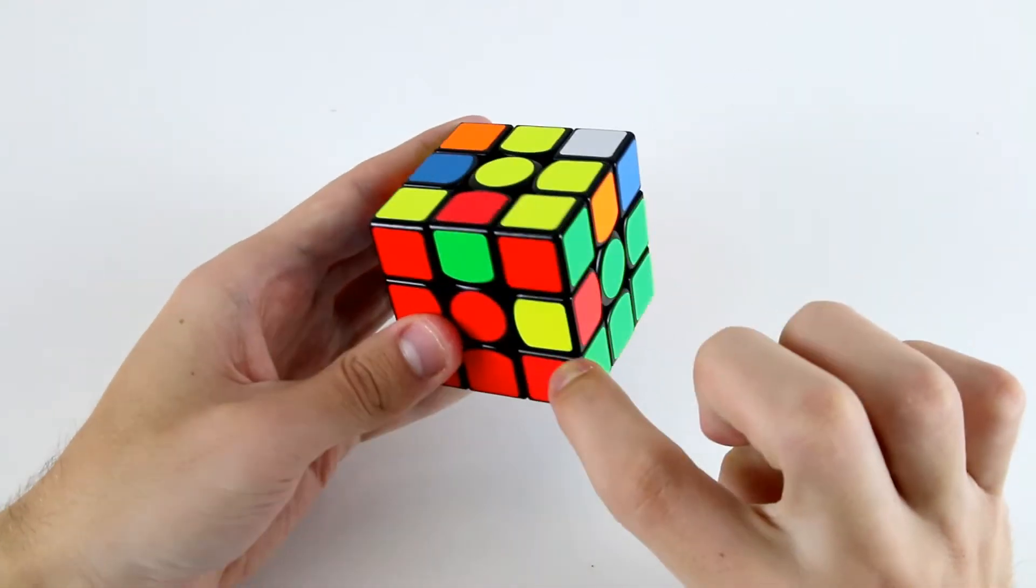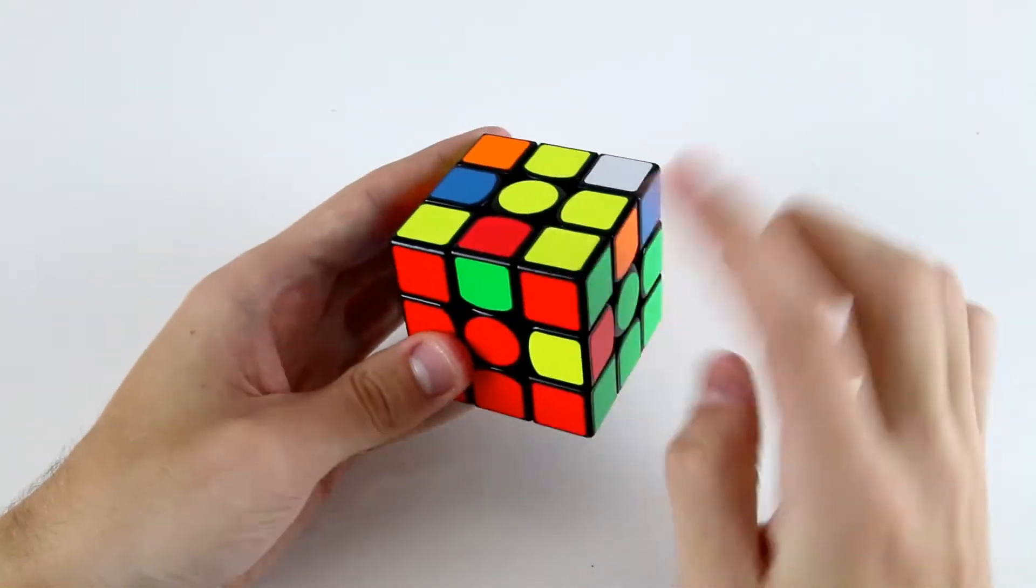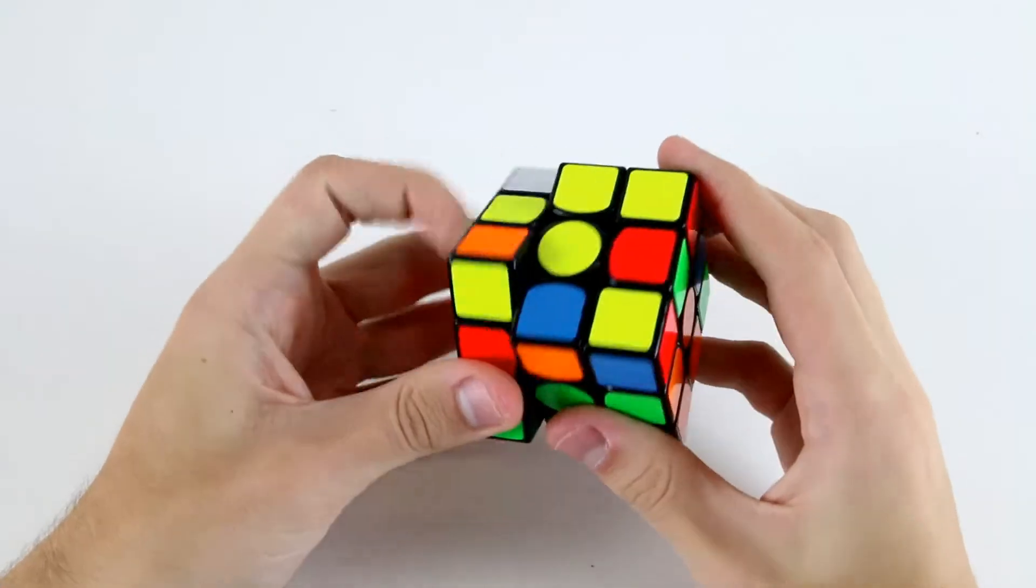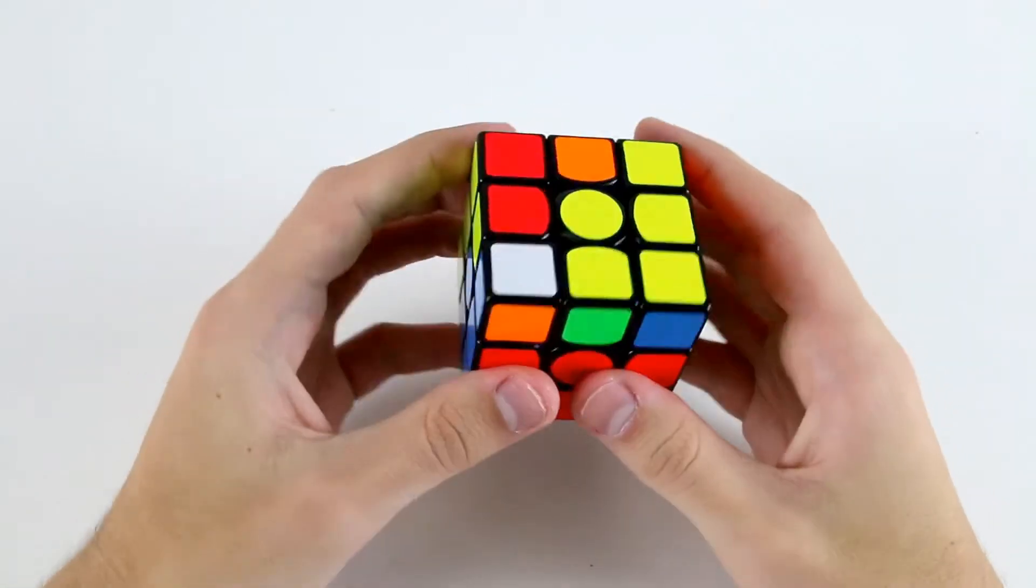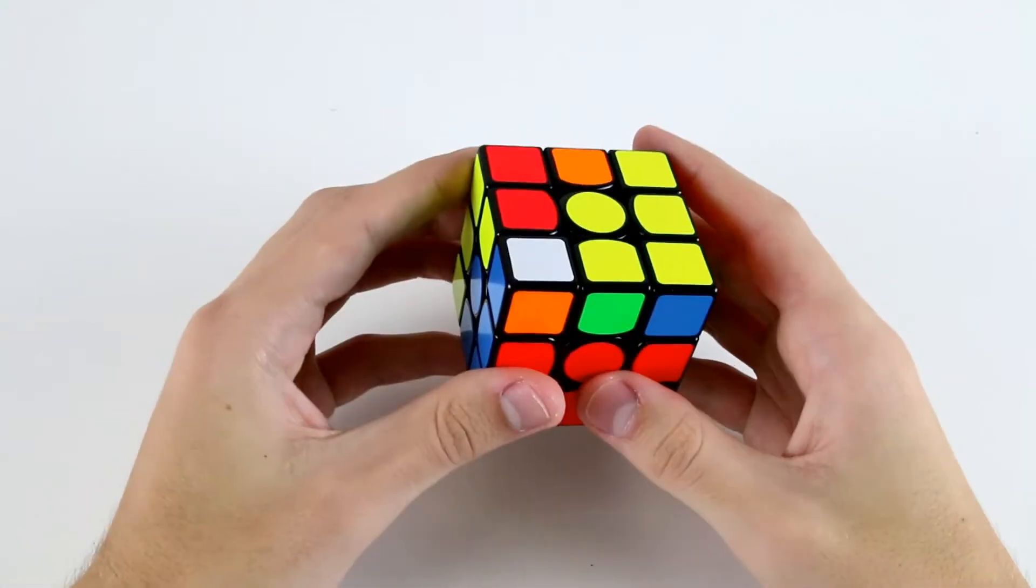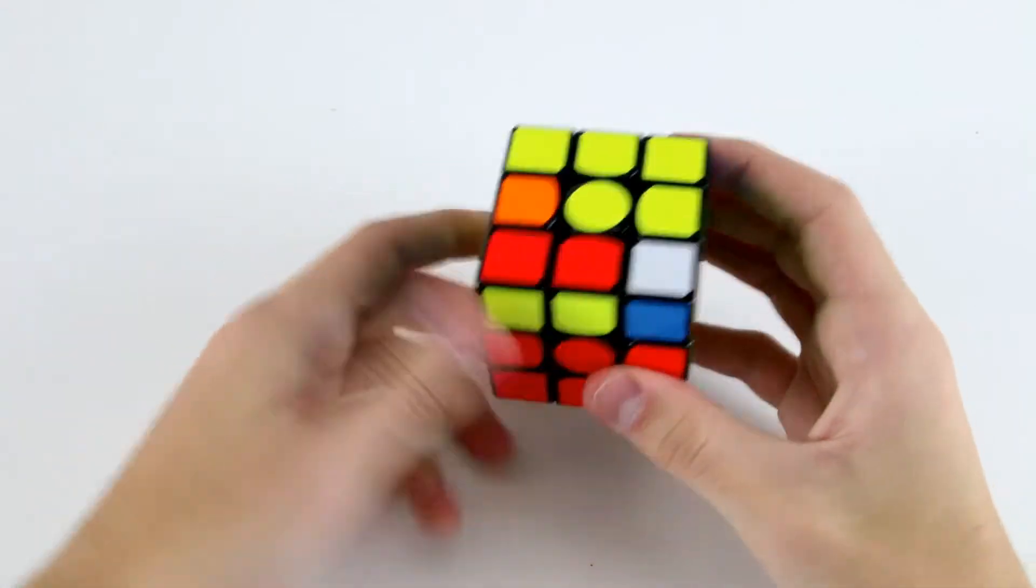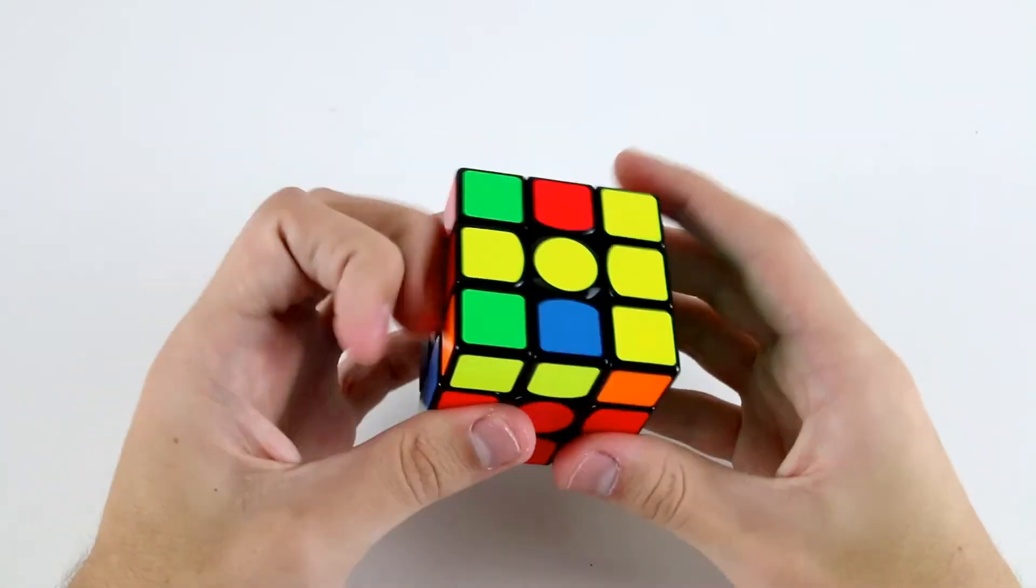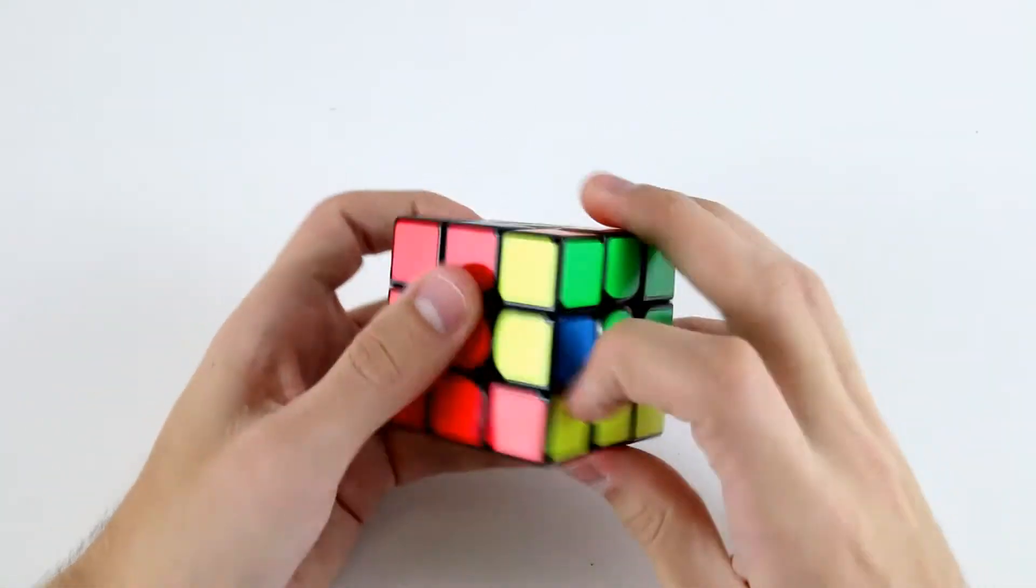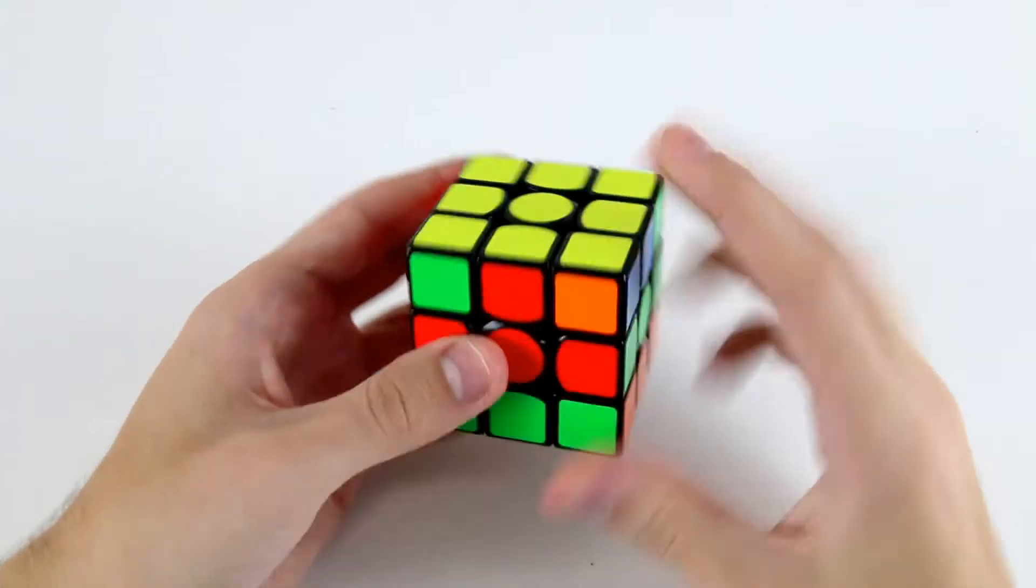Then I've got this corner and this edge, so I can probably just insert it like we would using the beginners method. Then I've got this edge and this corner which I can insert into the back left like that. Then I have OLL and a G permutation.